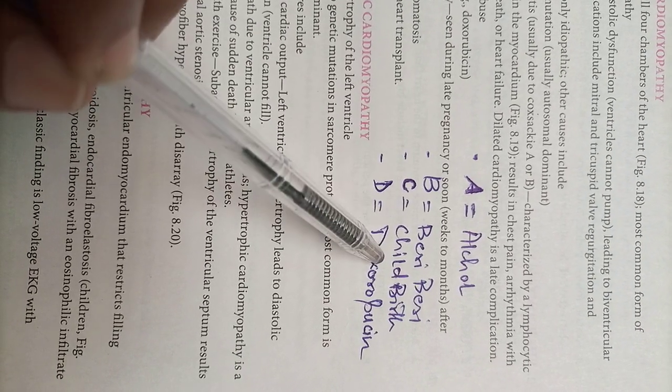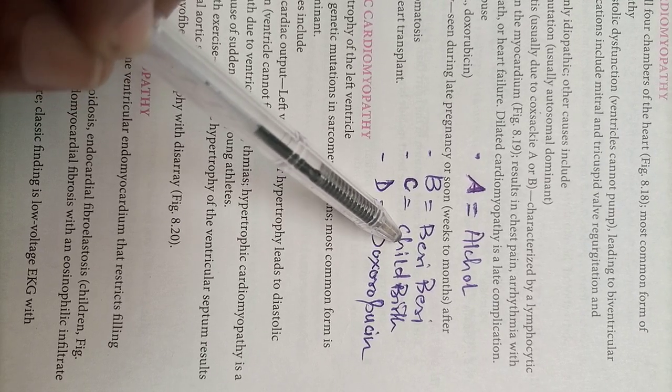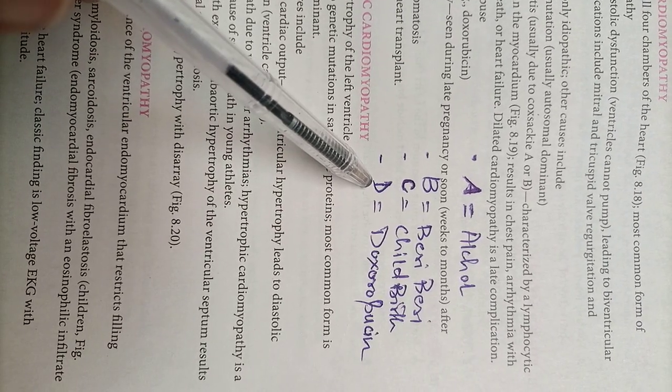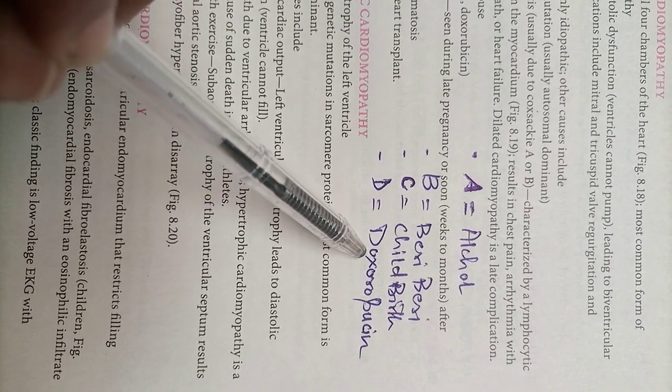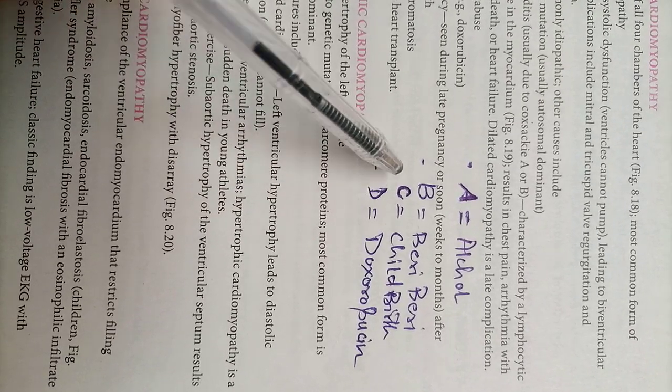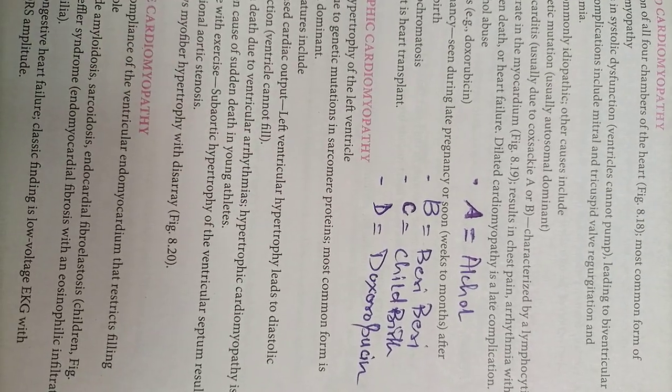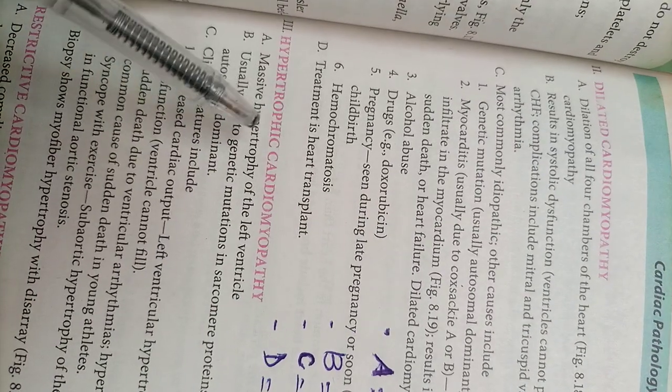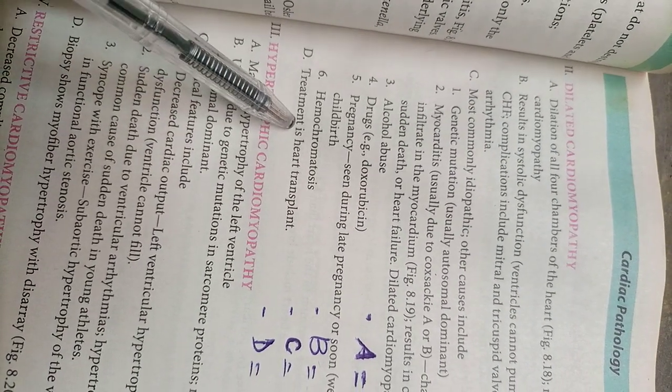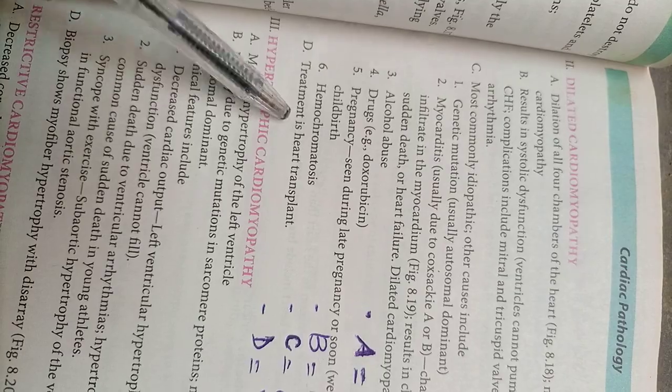C stands for after childbirth, there may be dilated cardiomyopathy occurrence. And D is for drug abuse, like doxorubicin drug can also cause dilated cardiomyopathy. So this one is dilated cardiomyopathy and its treatment is heart transplant.